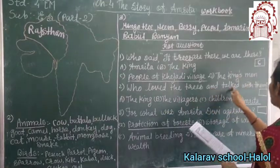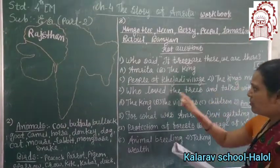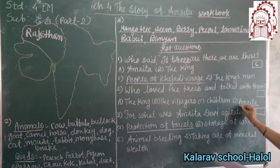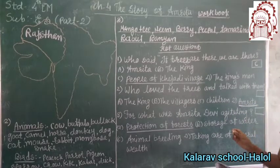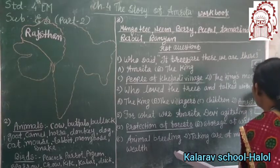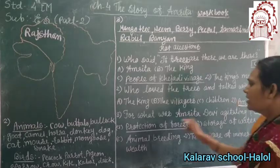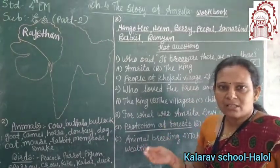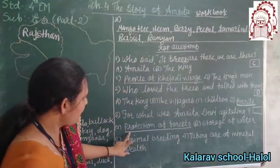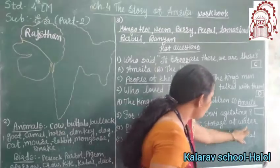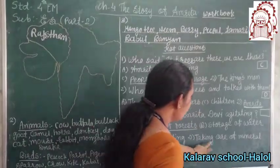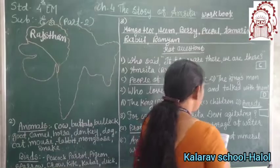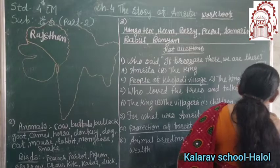Who loved the trees and talked with them — the king, the villagers, children, or Amrita? Amrita Devi every time went to the trees early in the morning to greet and talk with them. So write that down. For what was Amrita Devi agitating? Amrita Devi is agitating for the protection of the forest. That means the trees. So here the answer is option A.